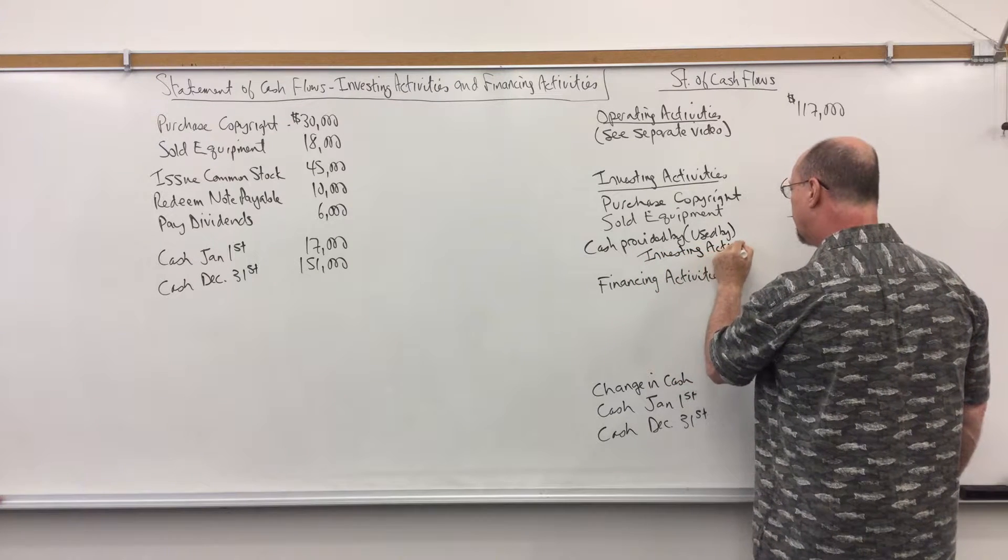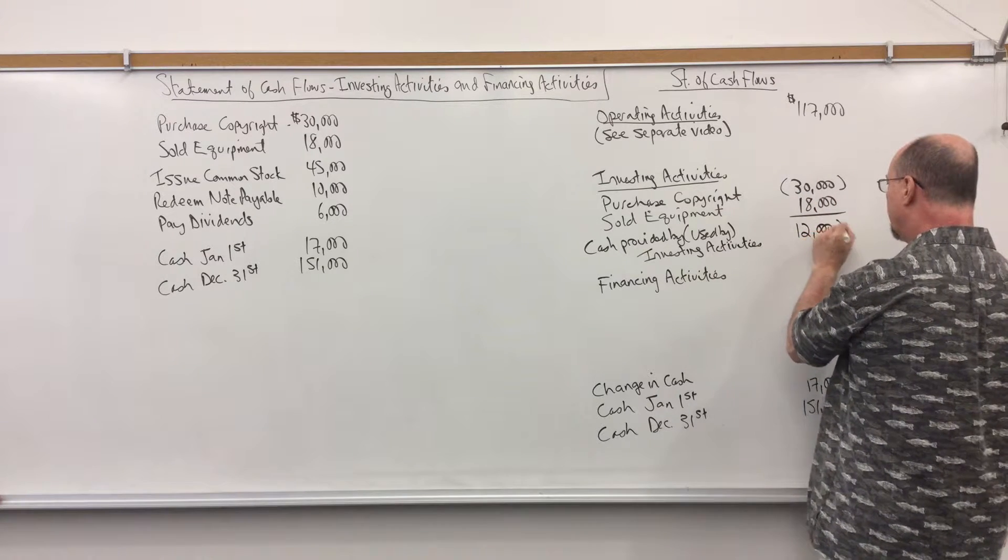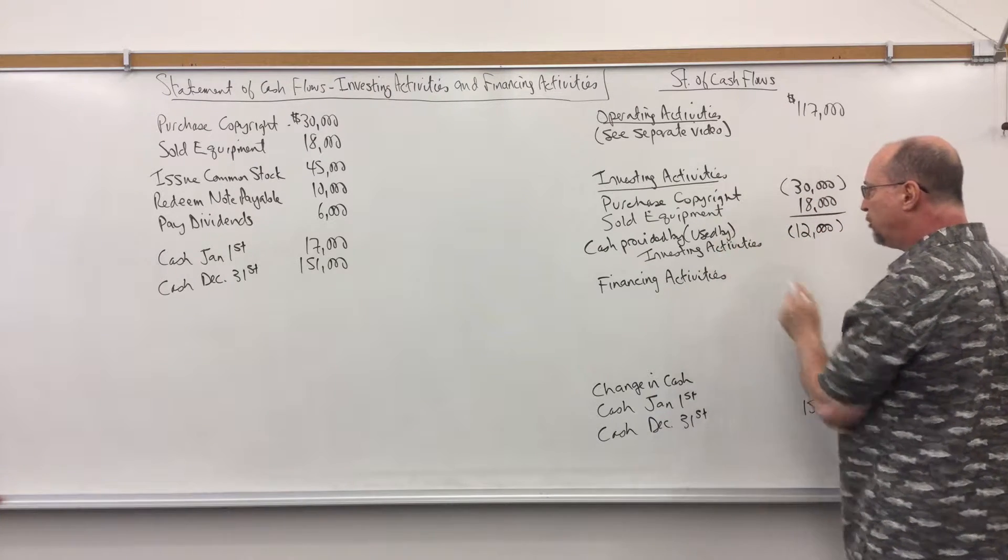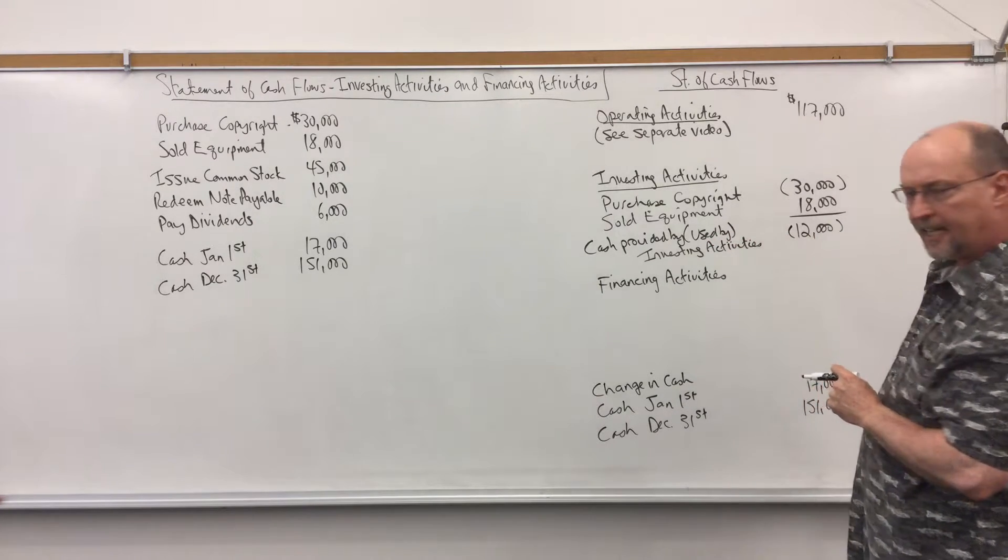And that would be $12,000 negative so that is a use so I put cash used by investing activities.